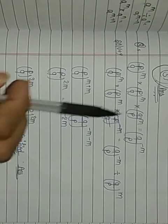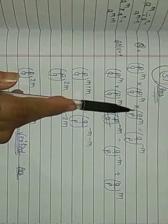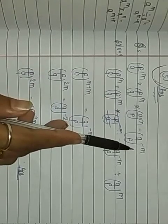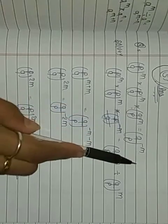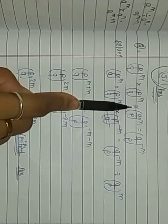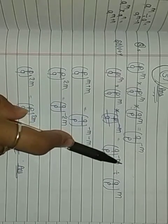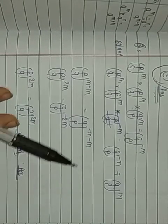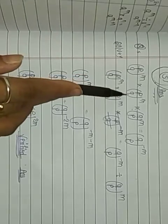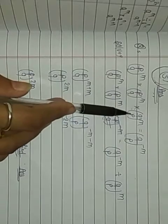The question is: (P/Q)^M × (P/Q)^M × (Q/P)^M = (Q/P)^M. We have two sides. For solving, I told you that if we move a term from one side to the other side across the equals sign: multiplication becomes division, division becomes multiplication, plus becomes minus, and minus becomes plus.